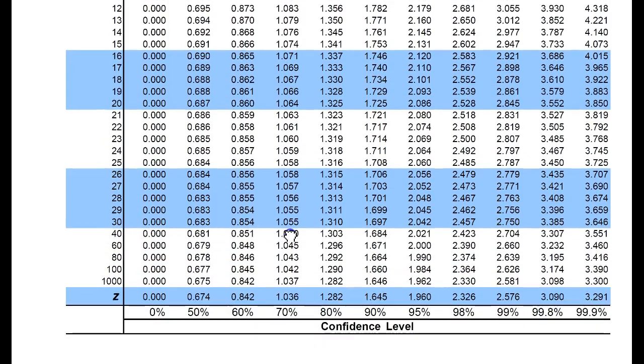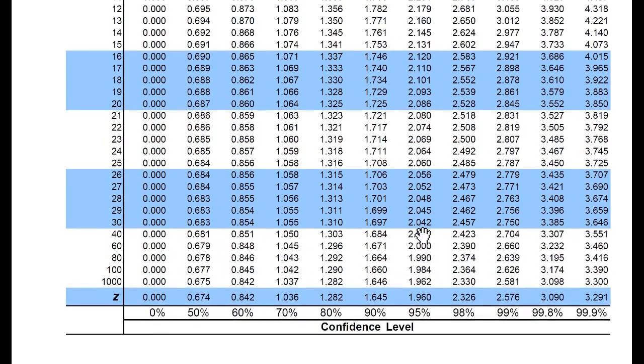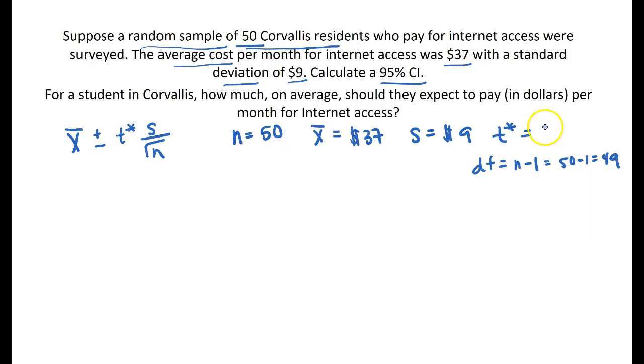We're going to cruise across that row until we match that with the 95% column down here. This will give me a critical value of 2.021 for degrees of freedom of 40 and a confidence level of 95%. So 2.021 is our t-critical value.